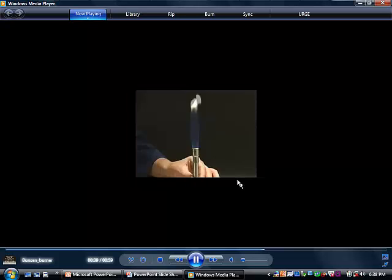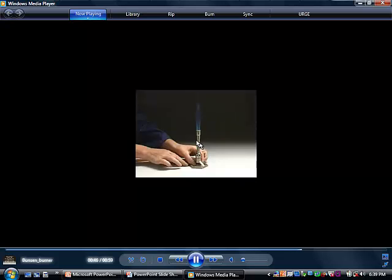You then control the flame by letting more or less oxygen in. We're letting more oxygen as we're spinning in this direction. Notice the flame now is starting to have that cone there, which means it's hotter.